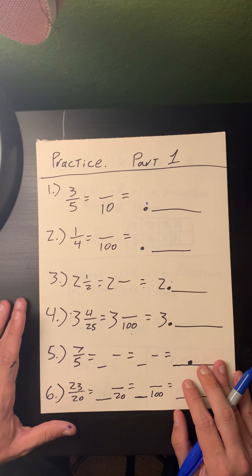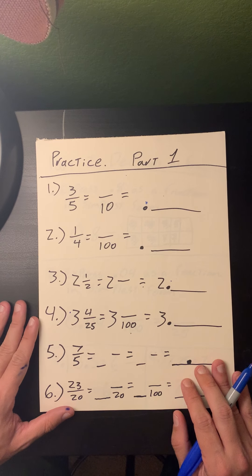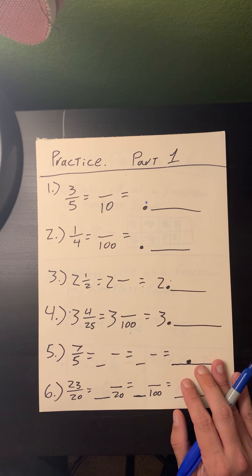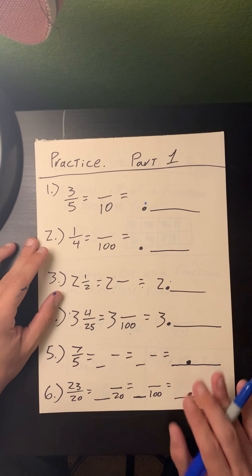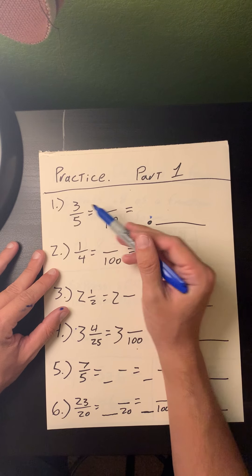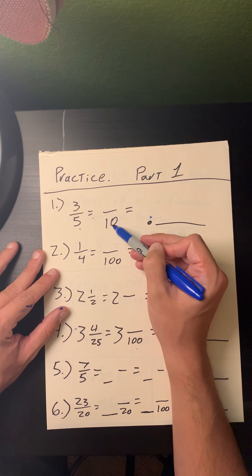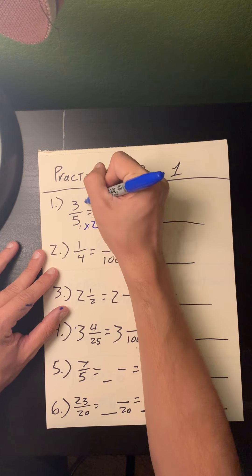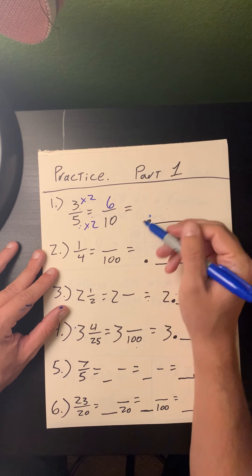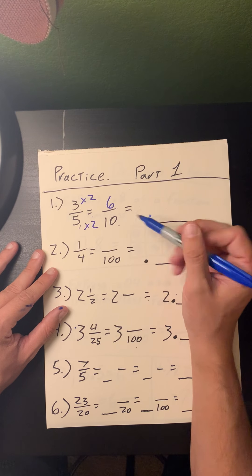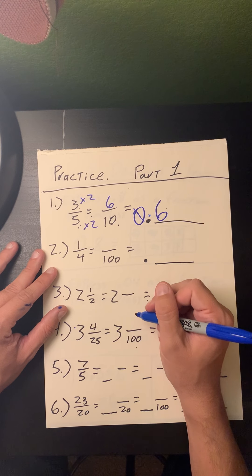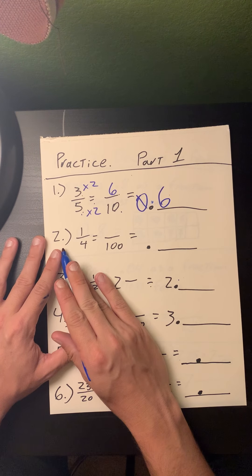This page has six practice problems, and I'm going to work through these to help you understand, so that when you get to the worksheet you can use these principles to solve those problems. Problem number one: three-fifths equals how many tenths? Five times 2 is 10, and 3 times 2 is 6. So as a decimal, six tenths is written as 0.6.